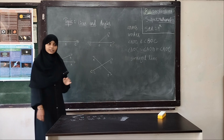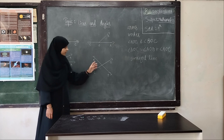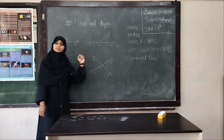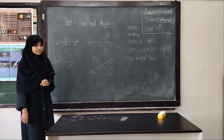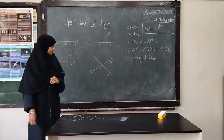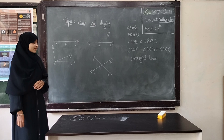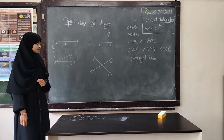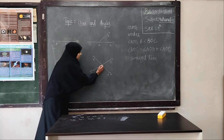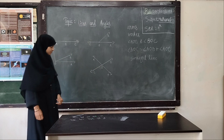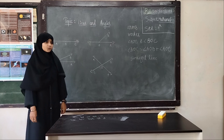How many pairs of linear angles are there in the fourth figure? Yes, Aditi. There are two pairs of linear angles: angle AOD and angle AOC, angle BOC and angle BOD. Very nice.